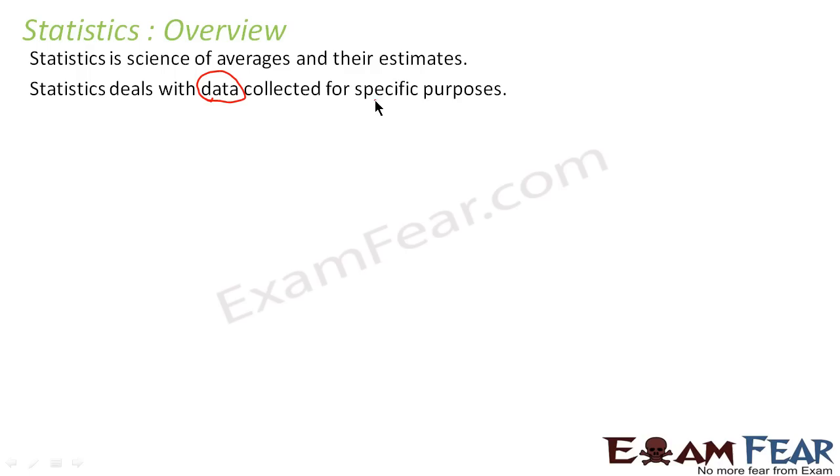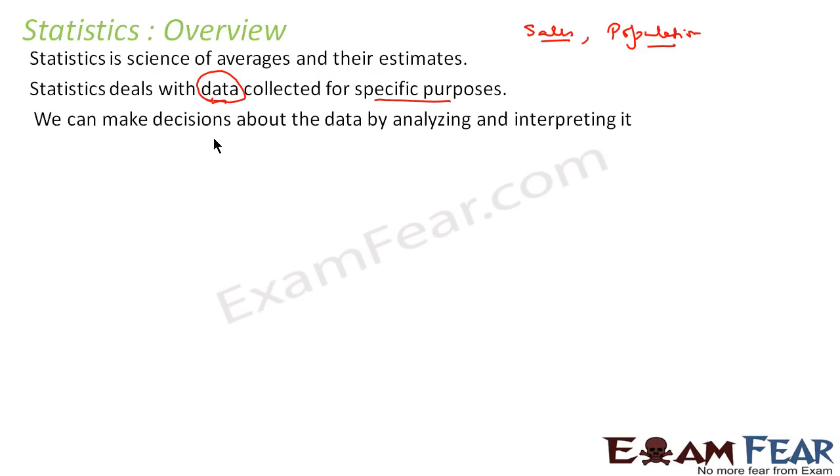Statistics deals with data collected for specific purposes. For example, sales data shows sales trends and sales per day. Population data has the population density of people across various places. So statistics is data for a specific purpose. What we do with this data is we take decisions. We make decisions with this data. We have huge data, we analyze it, interpret it, and make decisions.